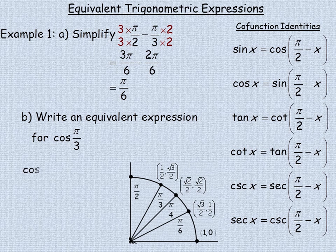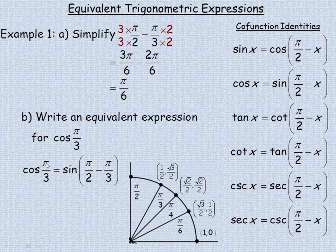Since that simplifies to pi over 6, the second cofunction identity is the one I'm using here. Think of pi over 3 as x. The cosine of pi over 3 is equal to the sine of pi over 2 minus pi over 3. Up here we found that pi over 2 minus pi over 3 is pi over 6, so the cosine of pi over 3 is equivalent to the sine of pi over 6.